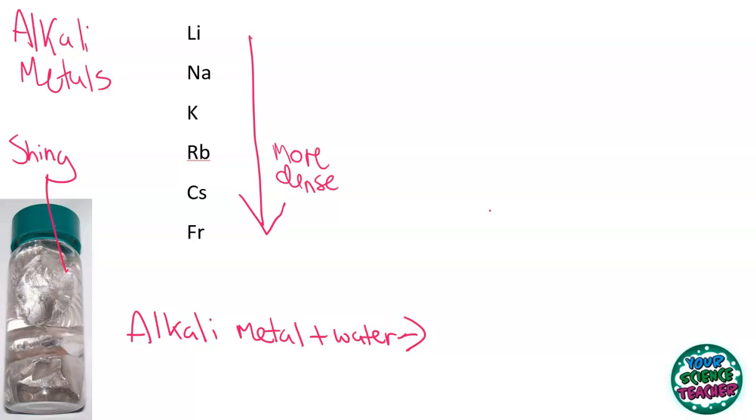So, as well as getting more dense down the group, the melting and boiling point decreases down the group. So, lithium will have a higher melting point than cesium, rubidium, francium and so on.